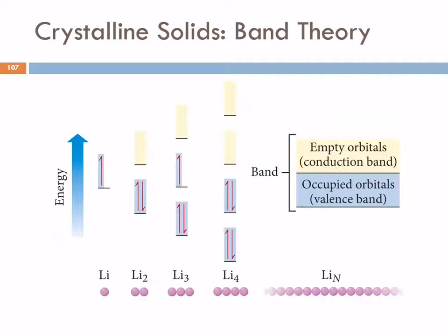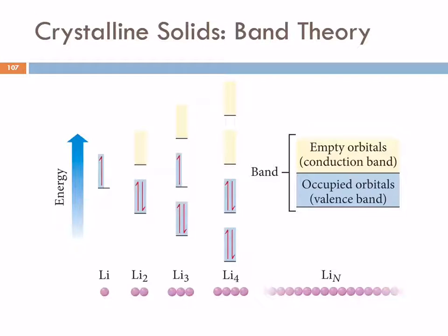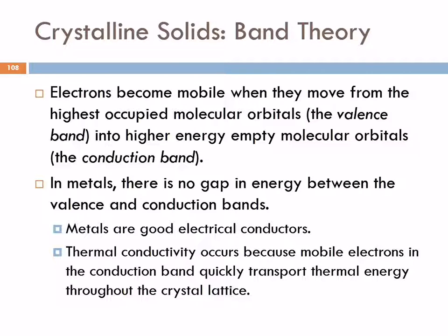If you can jump over into the shoulder, you can zoom along and go anywhere, whereas everybody else is stuck in traffic. The electrons in the valence band are not mobile, but electrons that get into the empty conduction band orbitals can move from one atom to the next and conduct electricity. Metals are good electrical conductors because the electrons can move into the conduction band and move through the metal — that's how it conducts electricity.